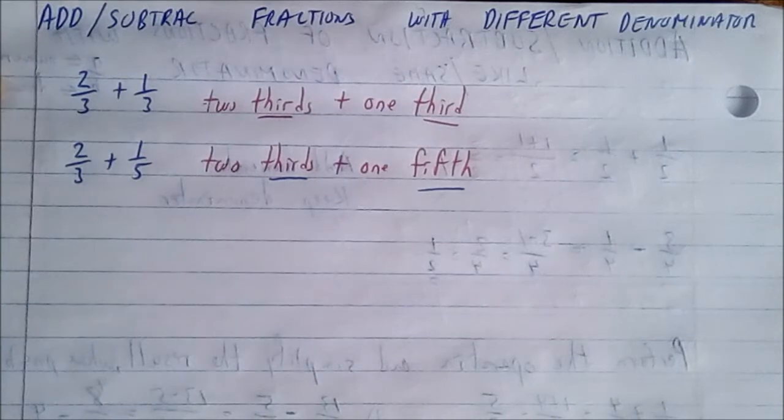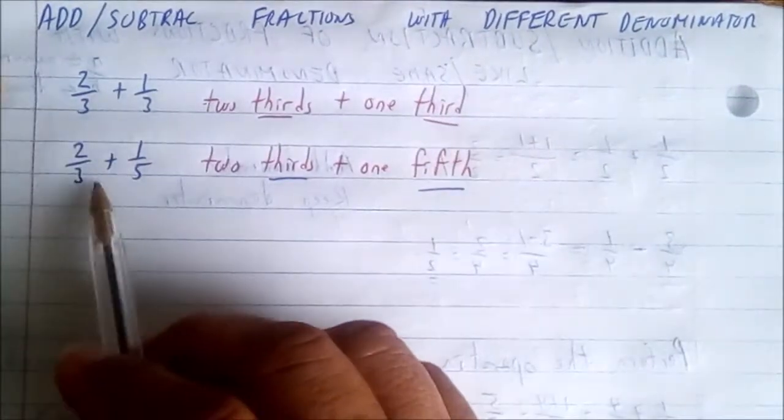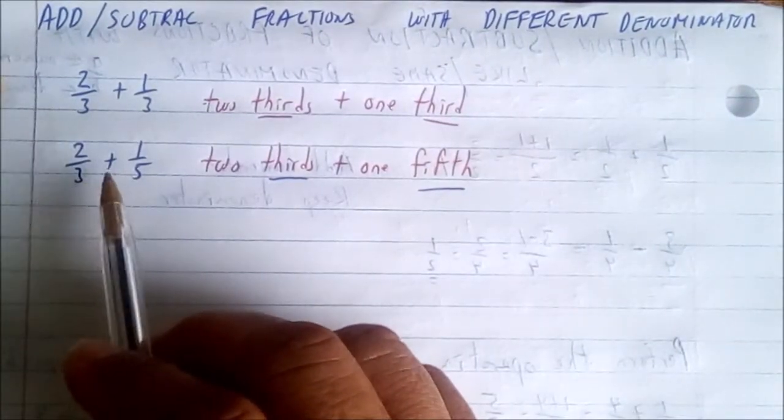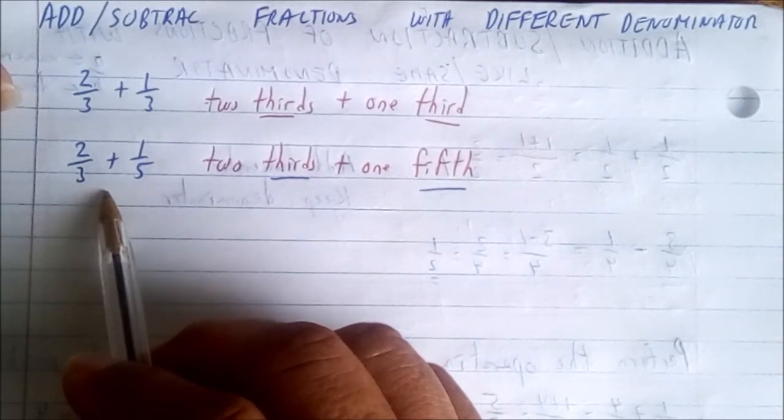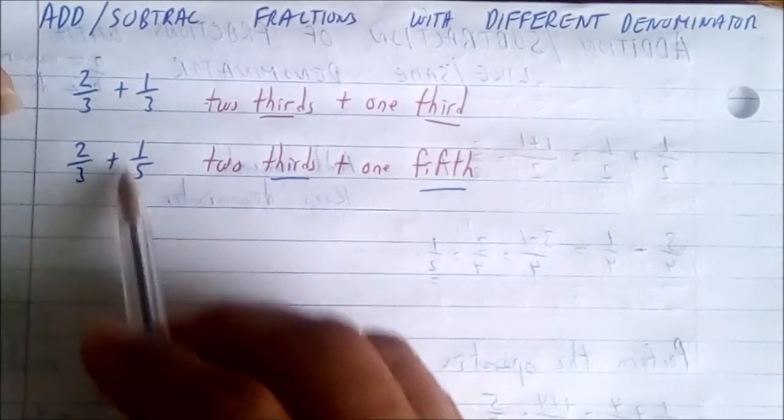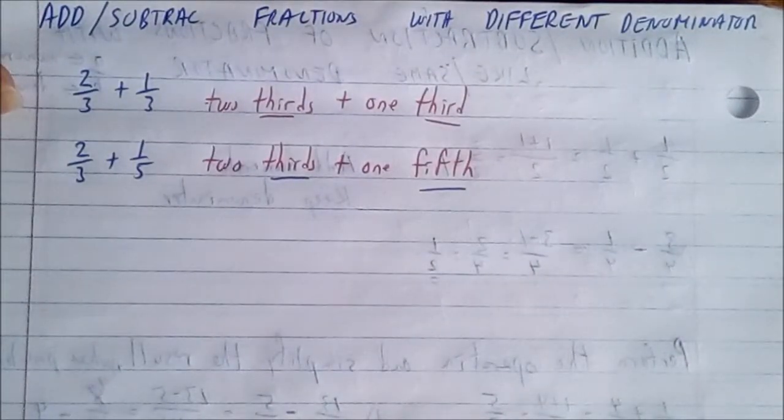So to add or subtract fractions with different denominators, as in this case here, we express them as equivalent fractions that have the same or common denominator. The smallest common denominator is called the least or lowest common denominator, and it is usually the easiest common denominator to use.